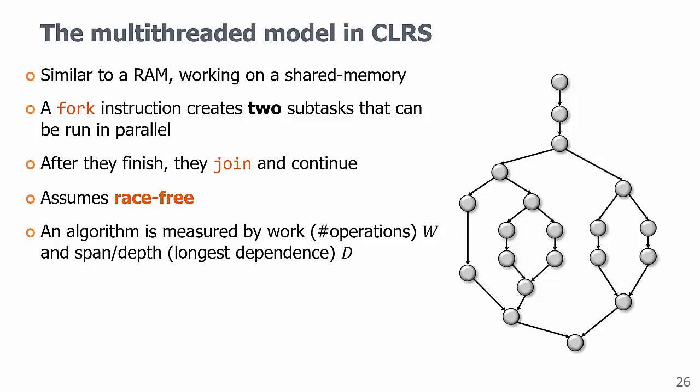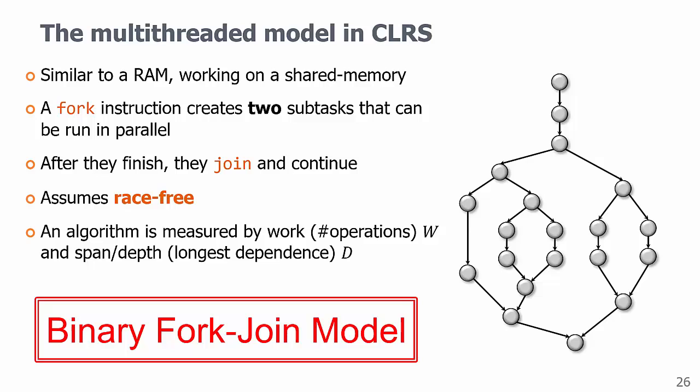So this model doesn't have a name, so let's first call it the binary fork-join model. Binary is due to binary forking, and we have fork and join in this model, so in total it's the binary fork-join model.